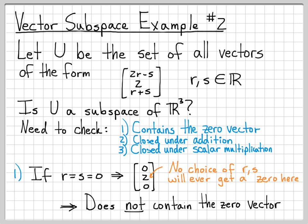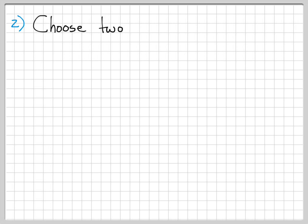Because U fails that check — it does not contain the zero vector — we can already conclude that U is not a subspace of R³. We'll continue working through the other properties just to see how those play out as well.